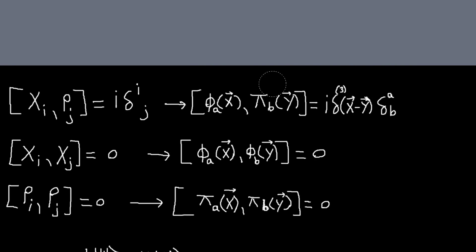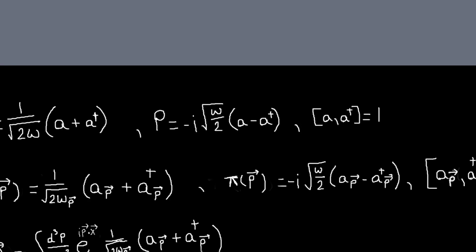When we're talking about the same point, the field and its conjugate momentum will satisfy this commutation relation. We have a delta a b because we can have multiple fields. So we'll only have this non-zero commutation relation if we're talking about a field and its own conjugate momentum. The different fields commute at all points and different conjugate momentum fields commute at all points.